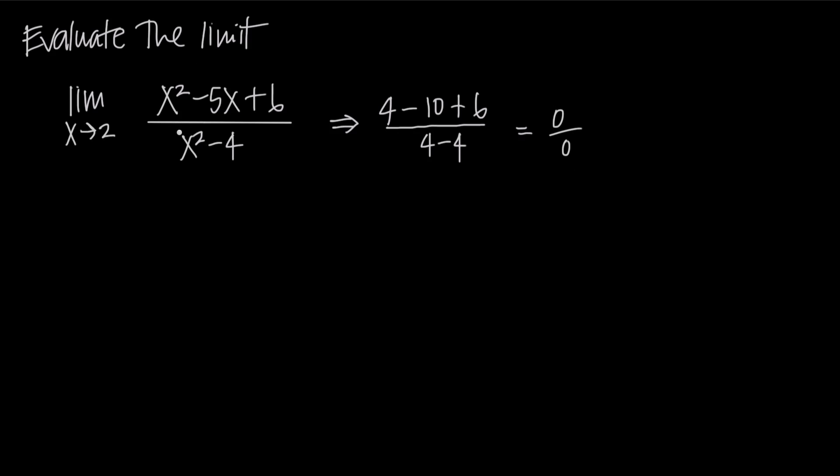So if we look at this rational function, in the numerator we have x squared minus 5x plus 6. Can we factor that? The factors of the coefficient on x squared, the coefficient's just 1, so the factors are 1 and 1. The factors of 6 are going to be 6 and 1 or 3 and 2.